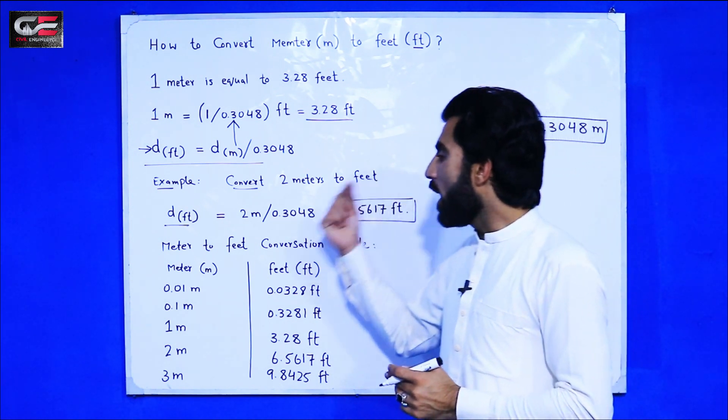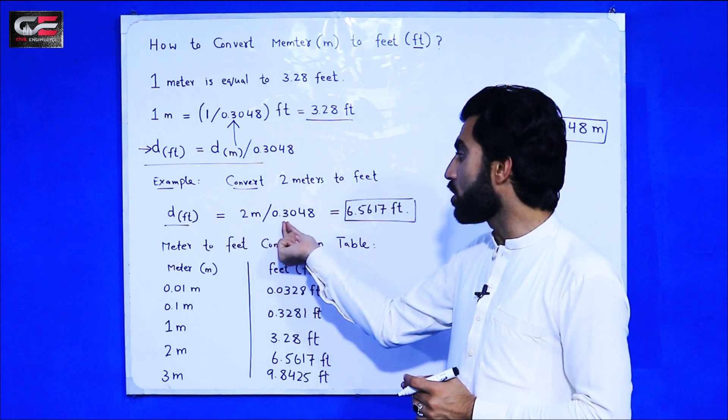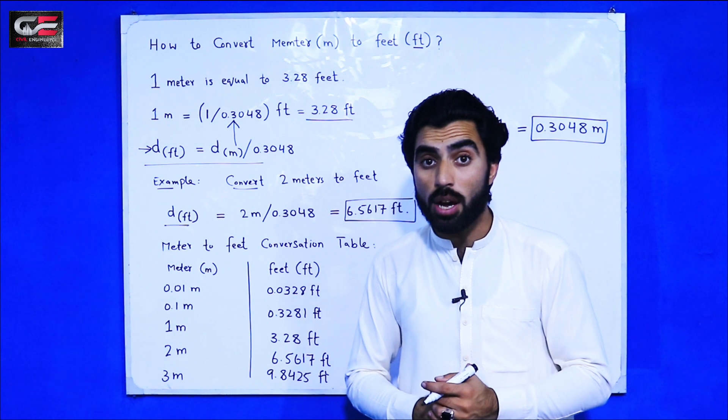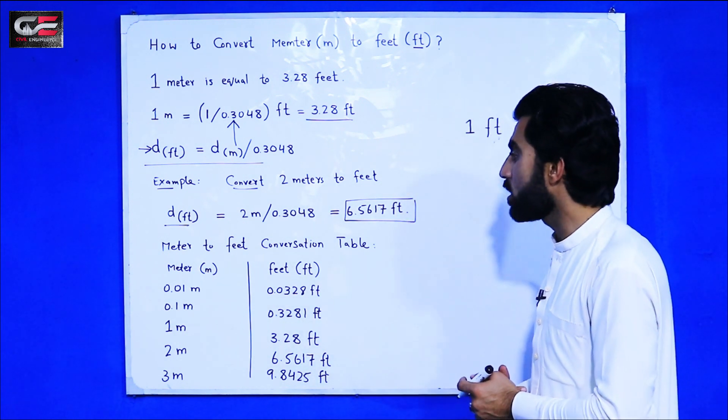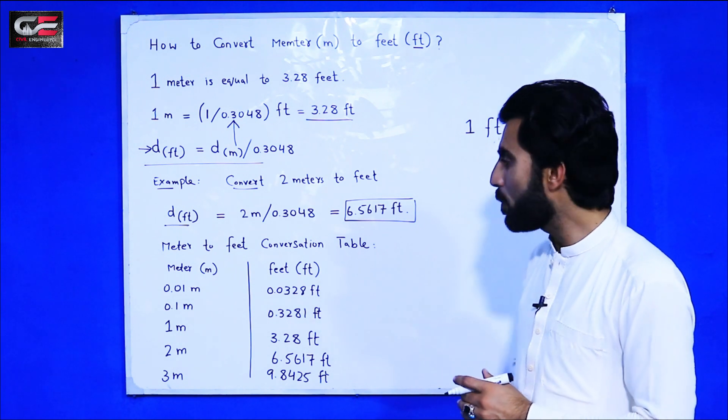So every meter, the number of meters should be divided by 0.3048 to convert it to feet. So this is the formula, how to convert meter to feet.